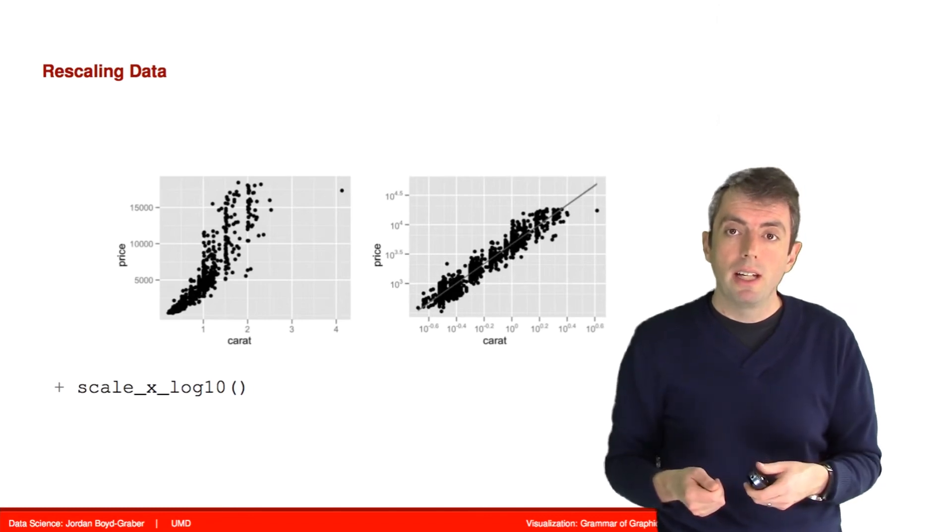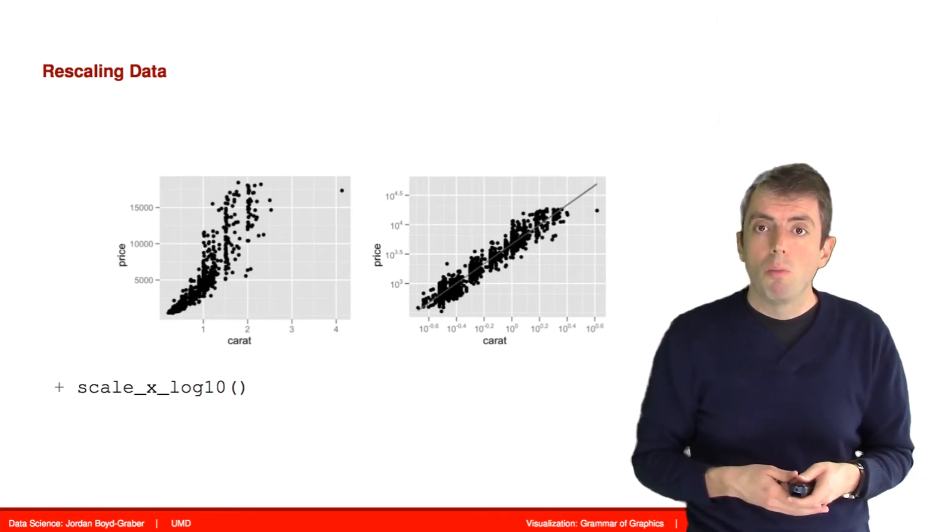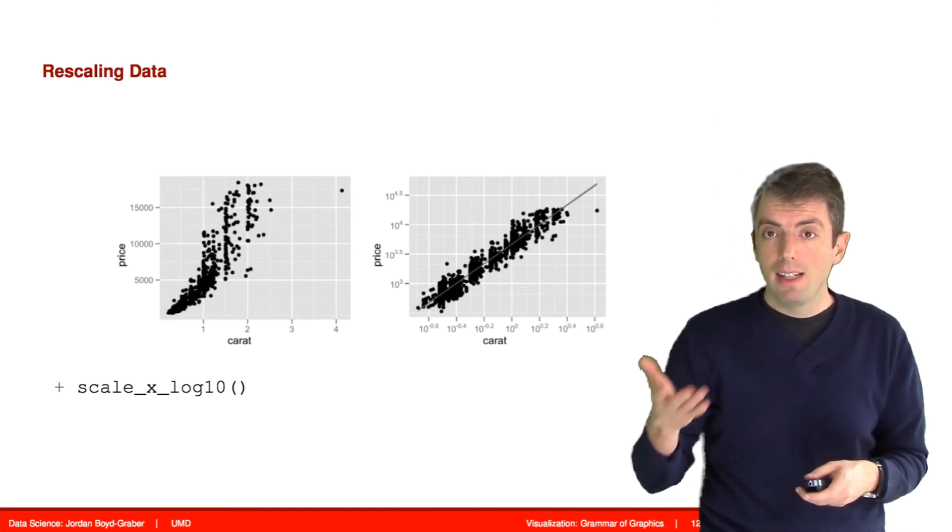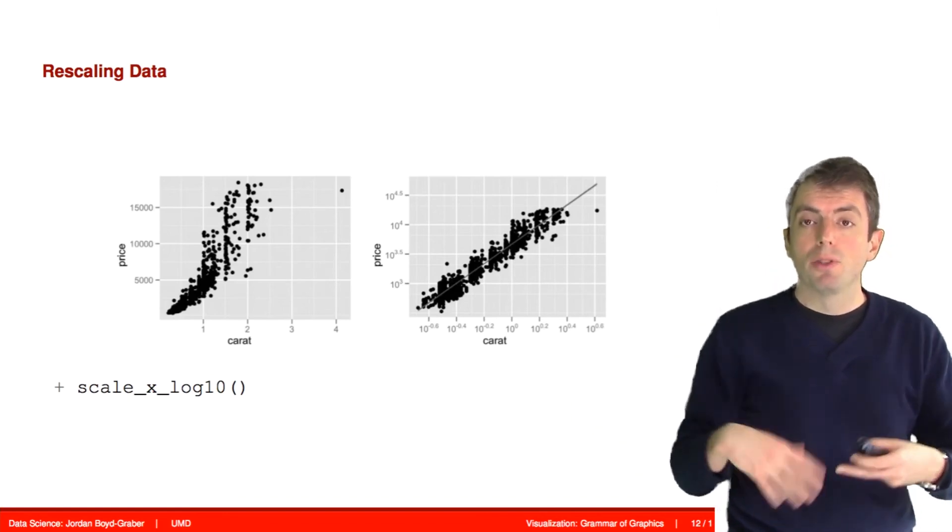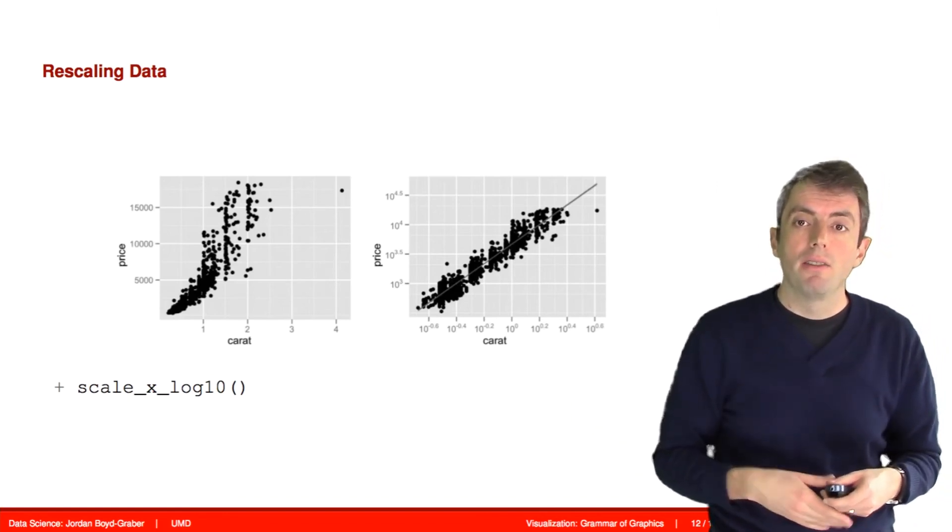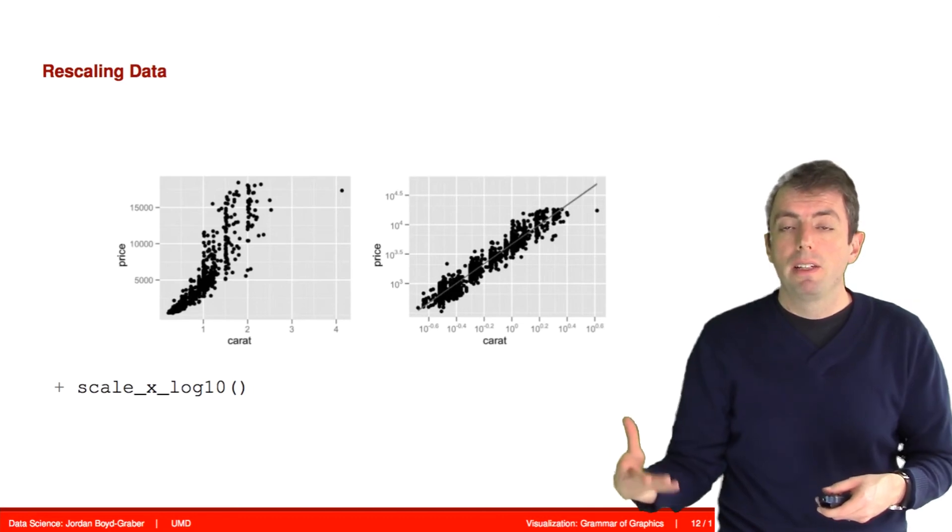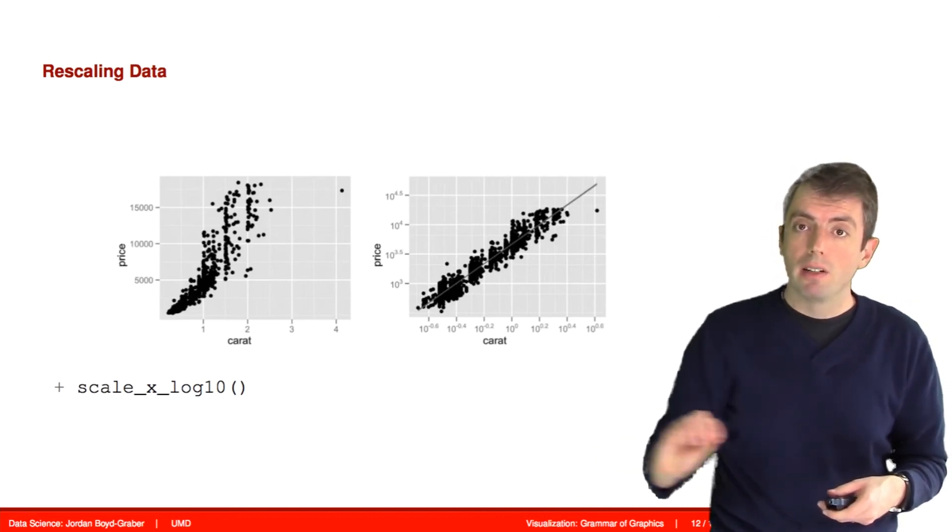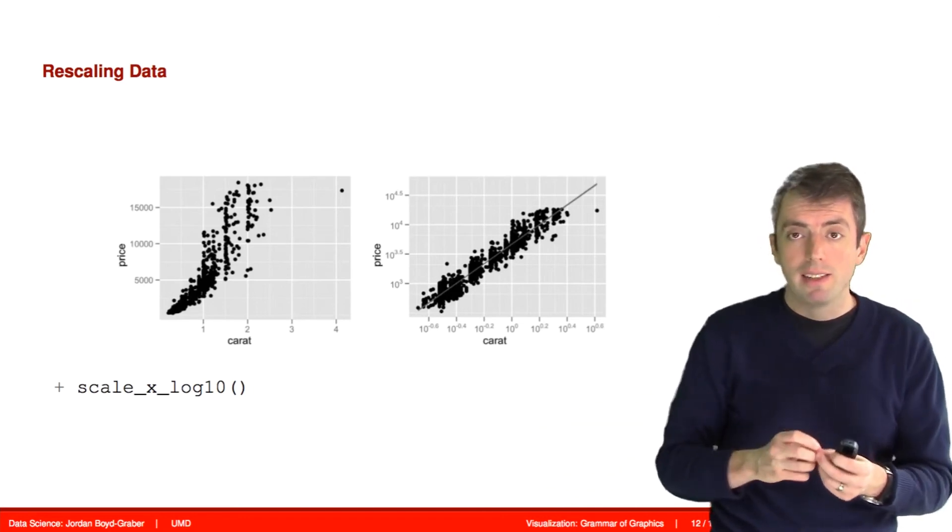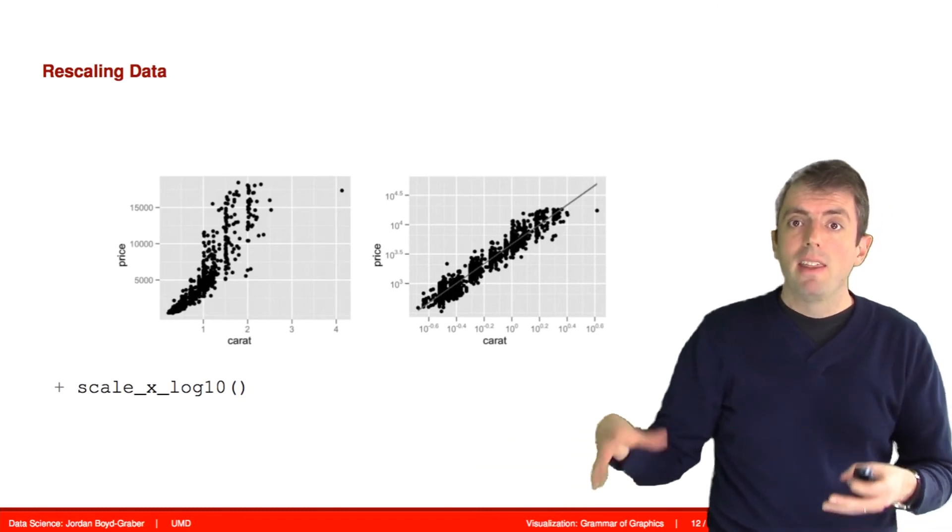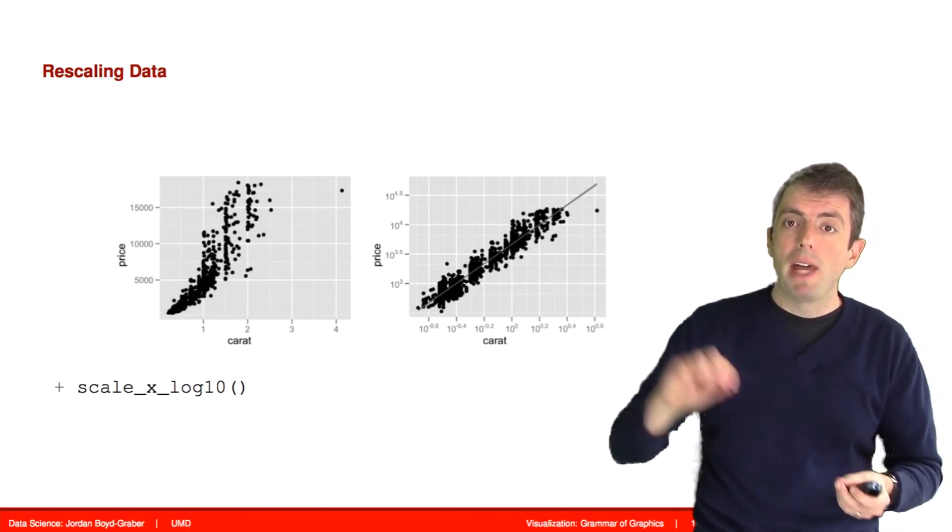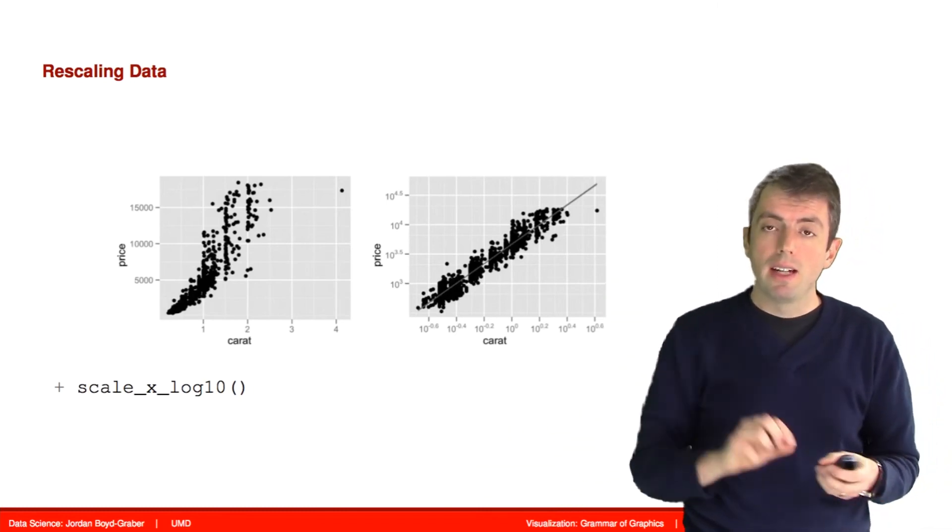This can help expose, for example, exponential relationships in your data into something a little bit more easy to digest and see. If you're looking at any sort of money value data, often it's very sensible to apply some sort of logarithmic scale because as prices get really big, they can make it hard to see patterns throughout the entire range of your data.